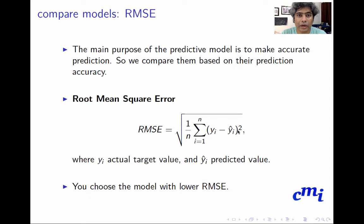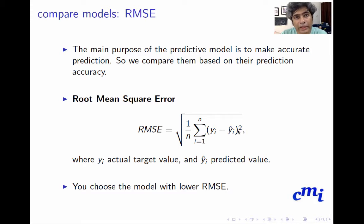One of the most popular model selection criteria nowadays is Root Mean Square Error. The main purpose of a predictive model is to make accurate predictions, so we compare models based on their prediction accuracy, and root mean square error does exactly that.